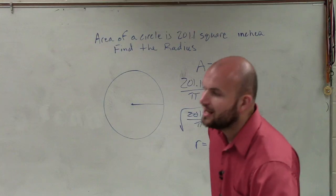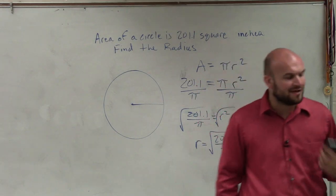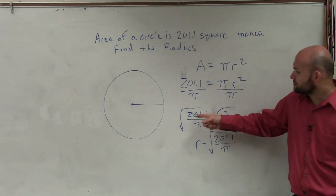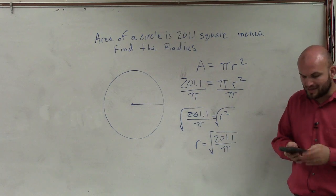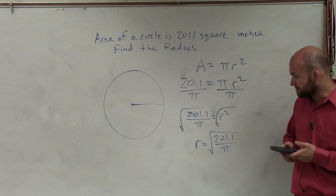So make sure, guys, again, I cannot emphasize this enough. Do not do 201.1 divided by pi and then round and then take the square root. Try to leave everything as far as their full answers as much as possible.